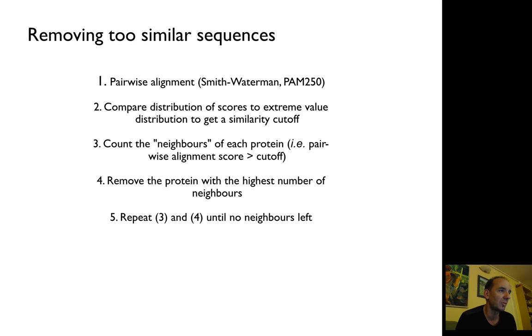Then you remove the similar sequences. You basically do pairwise—you take all the sequences, run pairwise alignment. In this case, you use PSI-BLAST. You compare the distribution scores to the maximum distribution and count the neighbors of each protein.